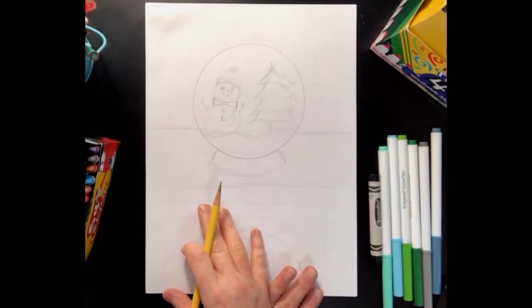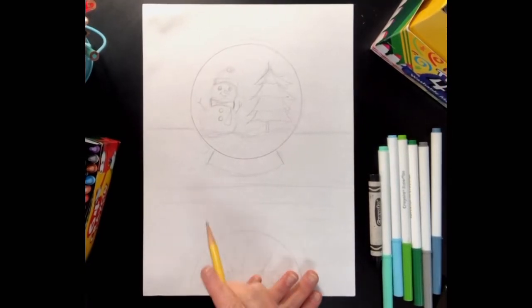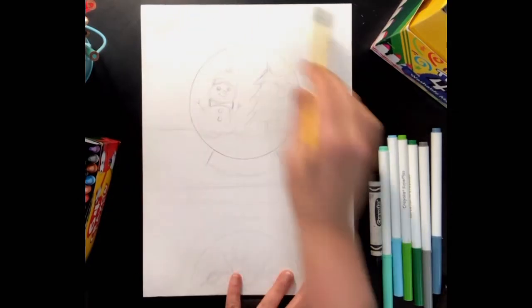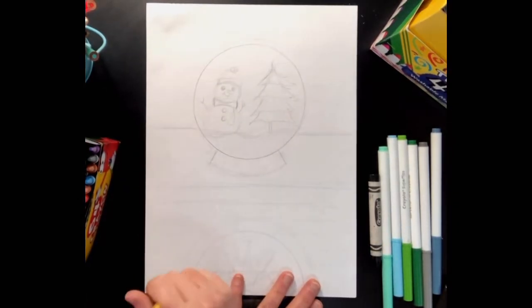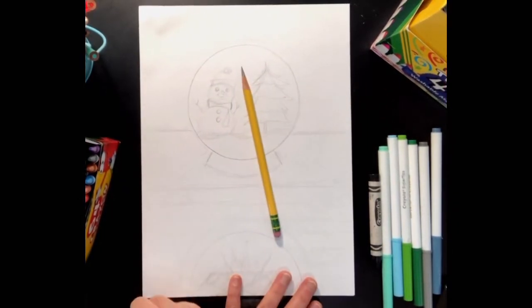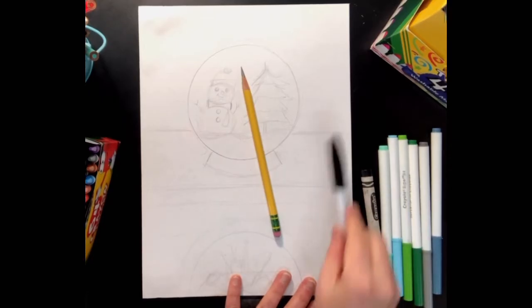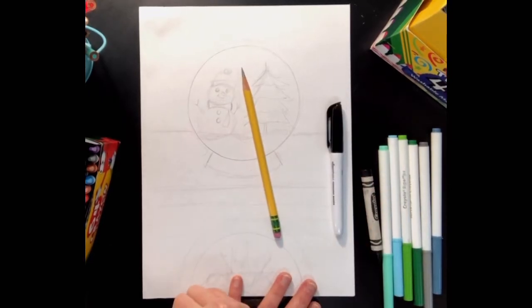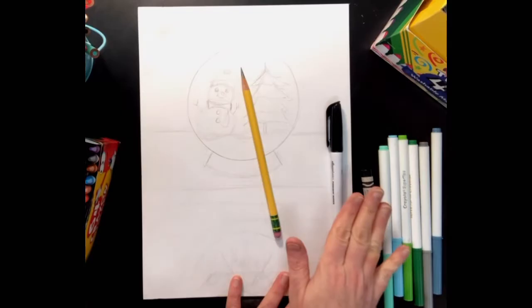Okay friends, we're going to get started on our snow globe still life today. You need a clean white sheet of paper, a drawing pencil, probably some type of black marker for outlining, and colored pencils, crayons, or markers for adding color.